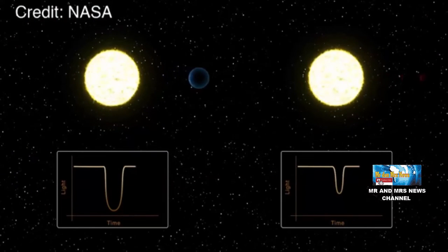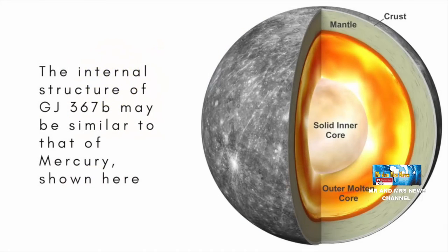Meski lebih kecil dan lebih dingin dari matahari, katai merah dingin masih bisa memanaskan planet seperti GJ367b.